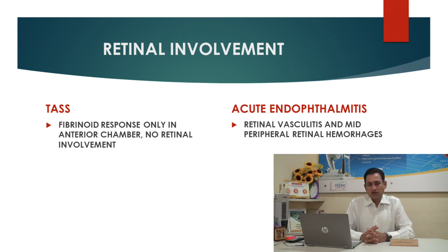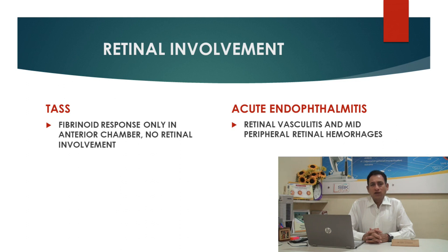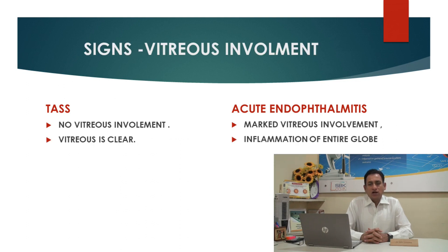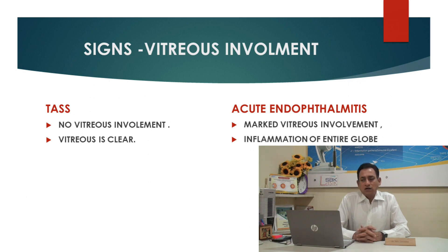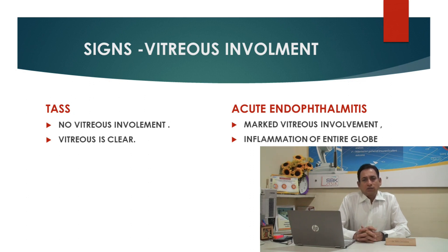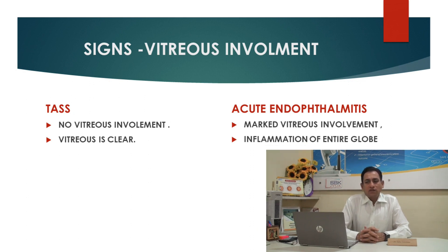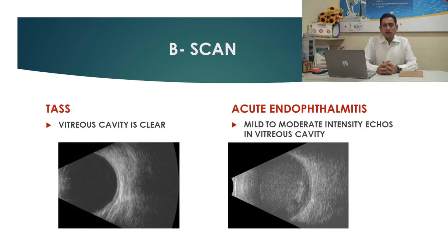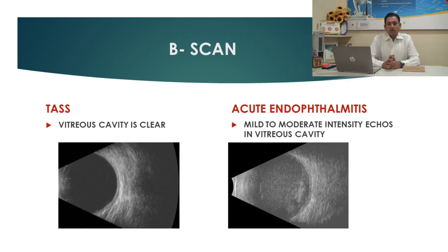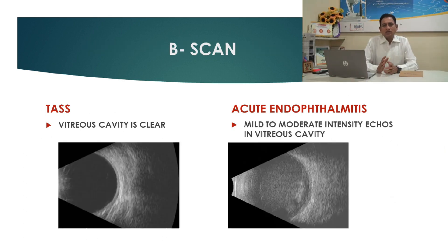In TASS, fibrinoid reaction is usually in the anterior chamber with no retinal involvement. In endophthalmitis, there will be retinal periphlebitis and mid-peripheral retinal hemorrhages in early stages. In TASS, vitreous is usually clear, while in endophthalmitis there will be marked inflammation in the vitreous, and on B-scan, there will be mild to moderate echoes in the vitreous cavity.